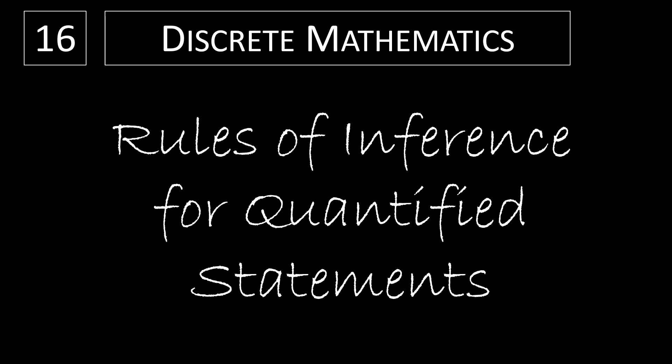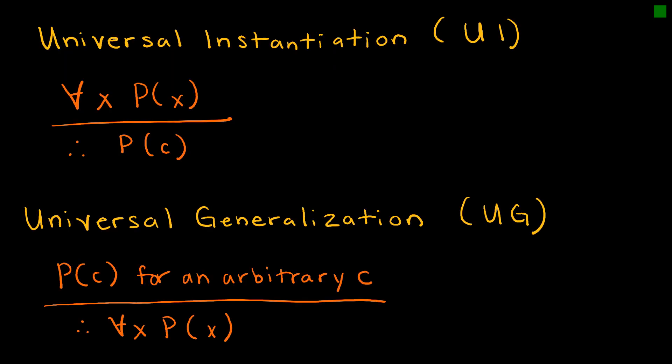We just learned about how to use the rules of inference to make a valid argument, and we're going to continue doing that. In this video, we're going to focus on statements that have quantifiers. We would like to develop some rules that we can use when we're dealing with quantified statements. Our first rule is universal instantiation, which we abbreviate as UI.